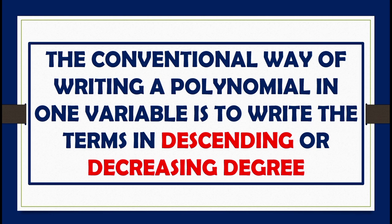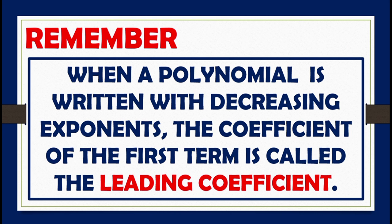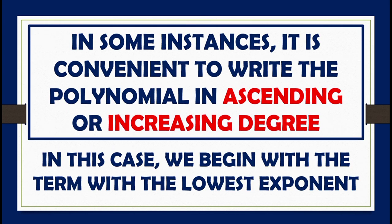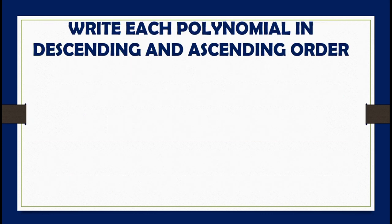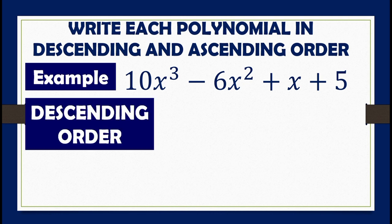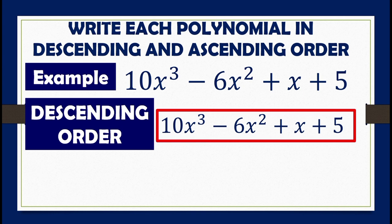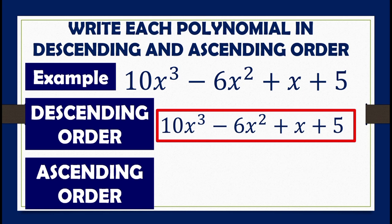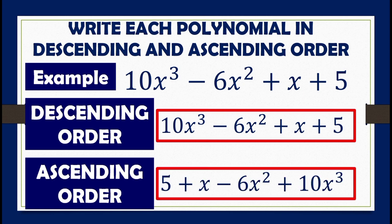The conventional way of writing a polynomial in one variable is to write the terms in descending or decreasing degree. Remember, when a polynomial is written with decreasing exponents, the coefficient of the first term is called the leading coefficient. It is also convenient to write a polynomial in ascending or increasing degree, beginning with the term with the lowest exponent. For example, given 10x cubed minus 6x squared plus x plus 5: the descending order is 10x cubed minus 6x squared plus x plus 5, while the ascending order is 5 plus x minus 6x squared plus 10x cubed.